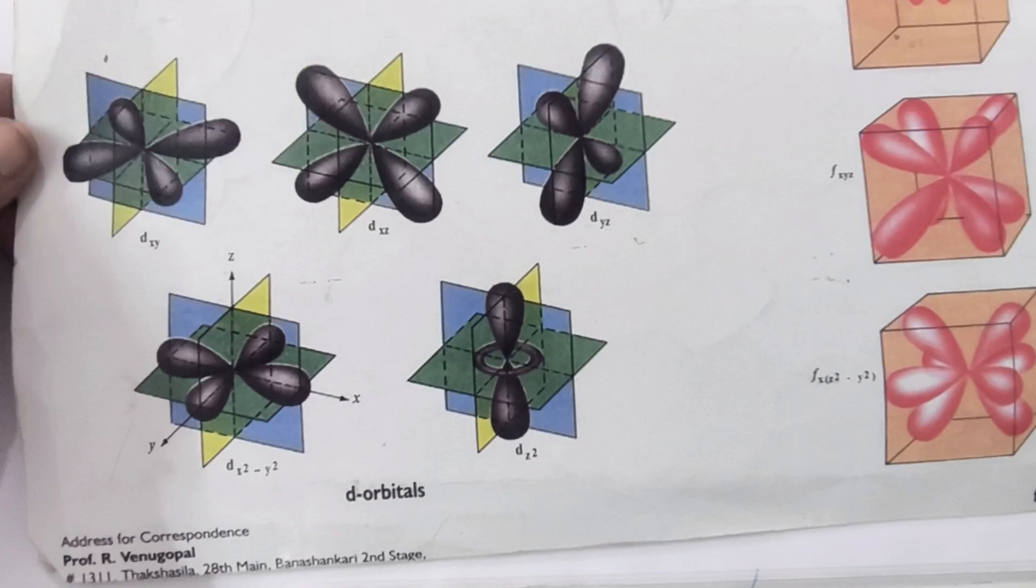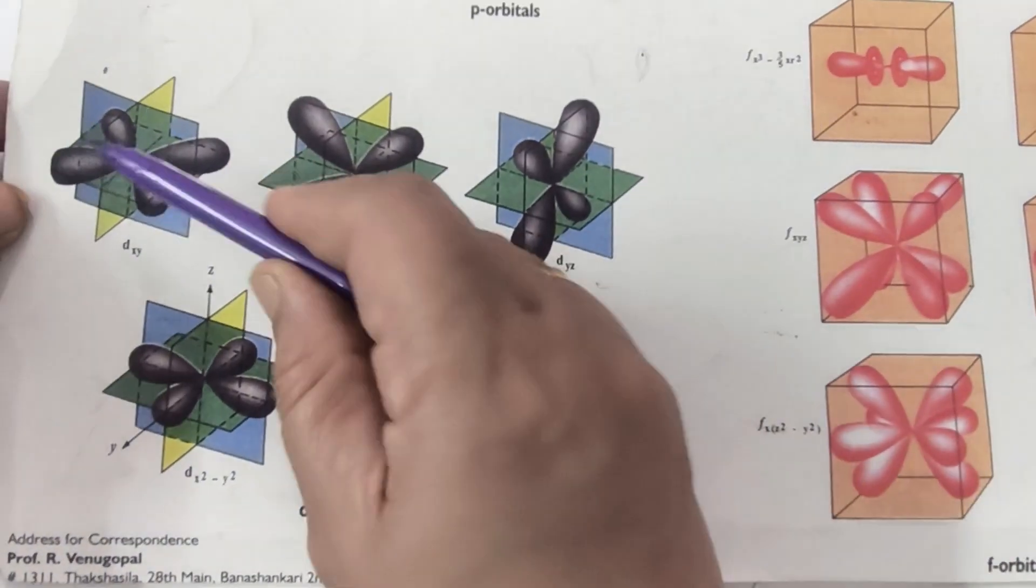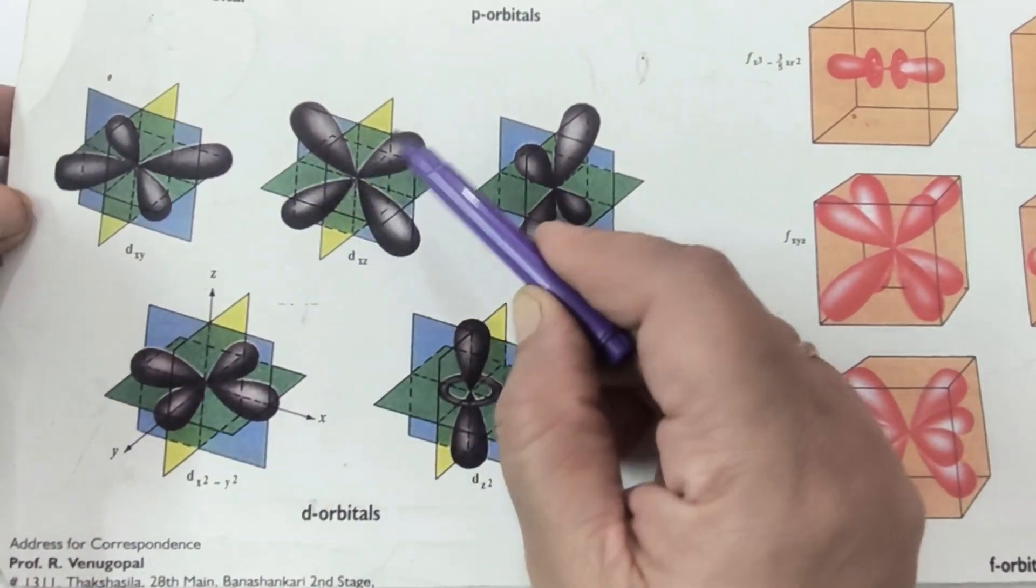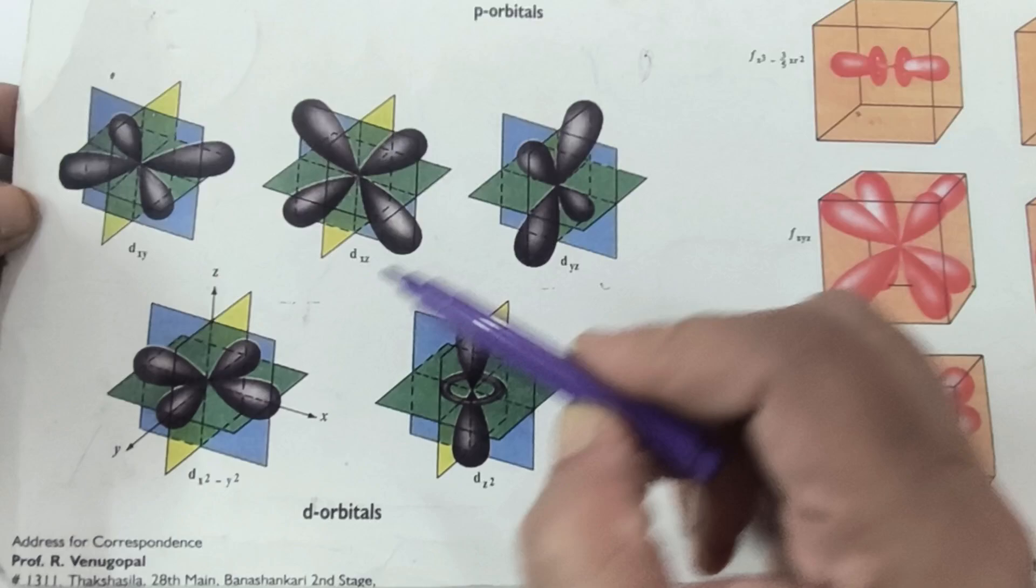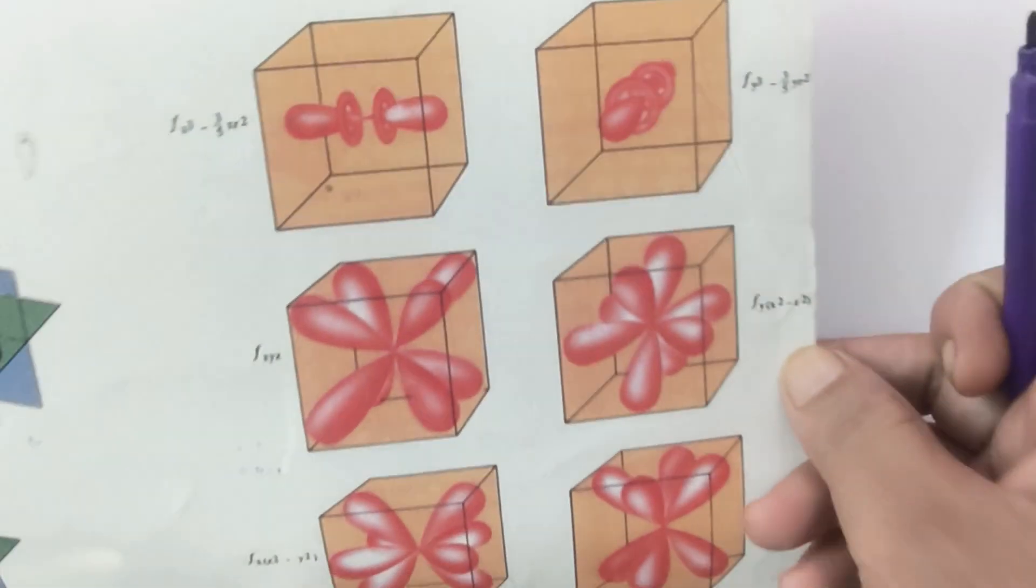The shape of p orbitals is dumbbell. When we are making separate px, py, pz, the shapes of the d orbital is double dumbbell like this. There are two and you can see the nodal plane is passing through them.